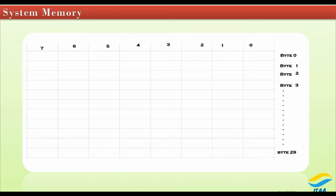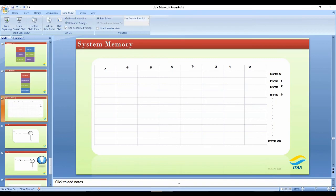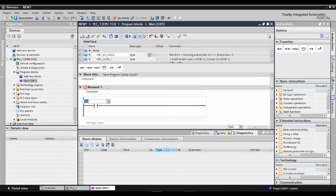ID stands for Double Word. ID0, for instance, defines a double word which contains 4 bytes — from Byte 0 to Byte 3. So the memory we use in addressing is called system memory. That needs to be very clear — if you still have questions, reach out in the comments and I'll explain more.